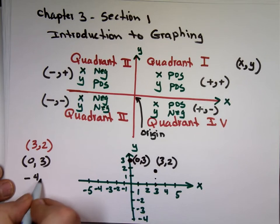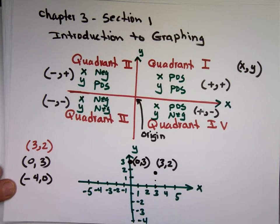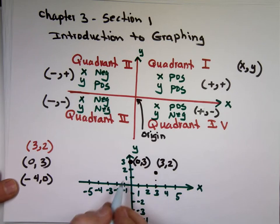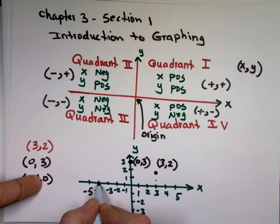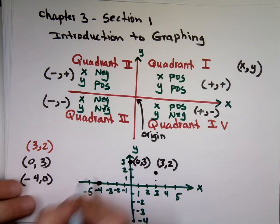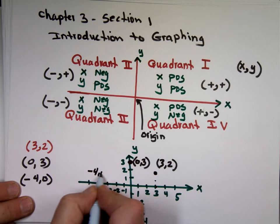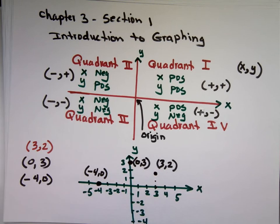(-4,0). Start at the origin. Move negative 4, or 4 units to the left in the x direction. Minus means to the left. So that puts me right here. Then move 0 units in the y direction. That means stay there. That's (-4,0).